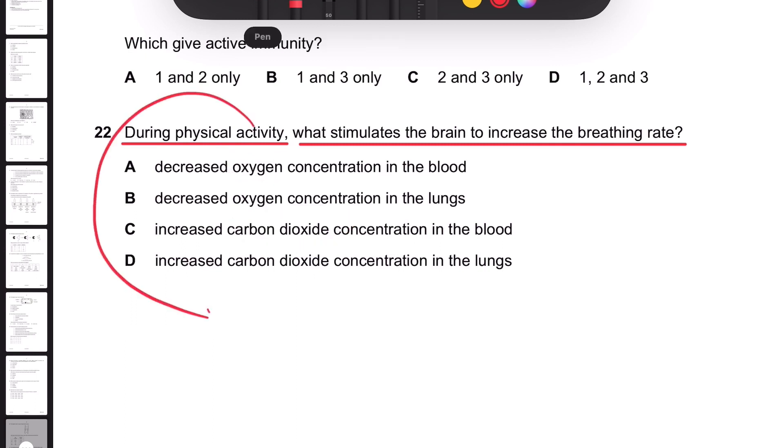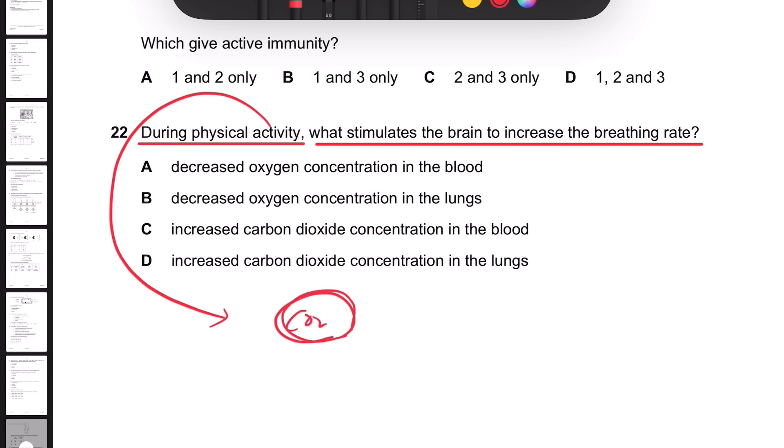After the physical activity, there's going to be a lot of respiration done, so there's going to be a lot of CO2 made as well. And a lot of CO2 causes the blood to become acidic.